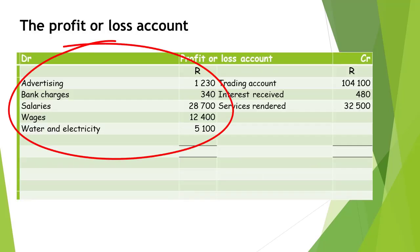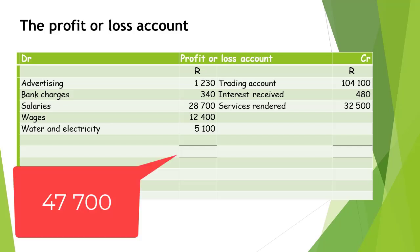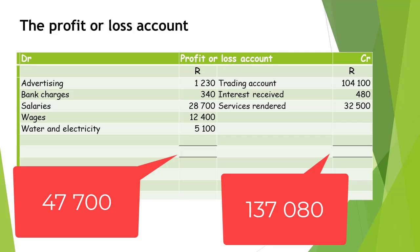All expense account totals are now reflecting on the debit side of the profit or loss account. The next step is to calculate the total of the debit side and the total of the credit side. After adding the amounts on the debit side, the total is R47,700. The total of the credit side amounts to R137,080.